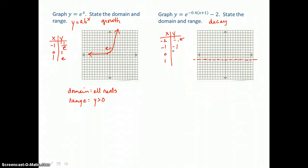When I let x equal 0, I have 0 plus 1, that's 1. 1 times negative .4 is negative .4, so I have e to the negative .4 power minus 2, and I'm getting approximately negative .3. Now letting x equal 1: 1 plus 1 is 2, times negative .4 is negative .8, and when I raise e to that power and subtract 2, I'm getting approximately negative .6.